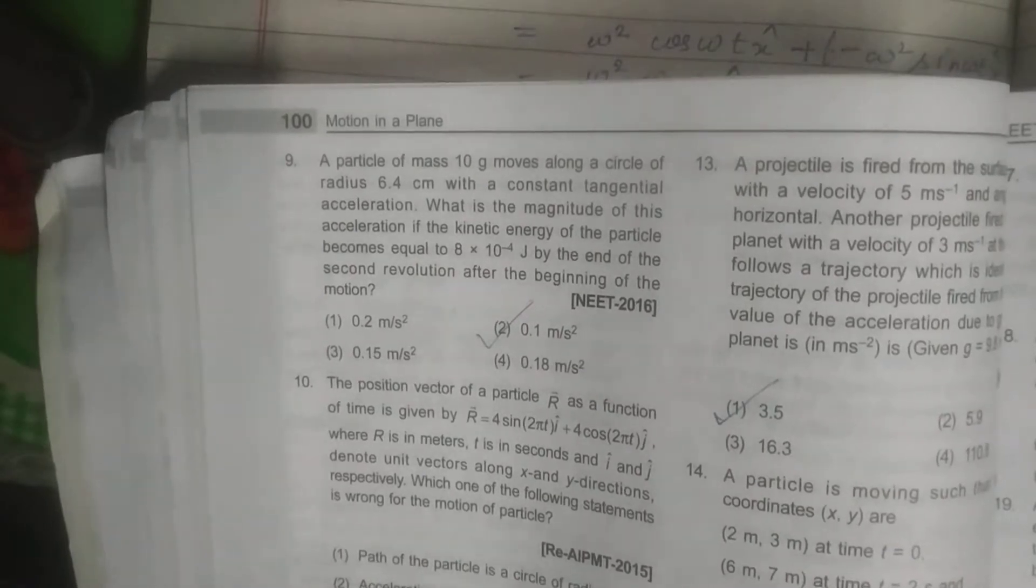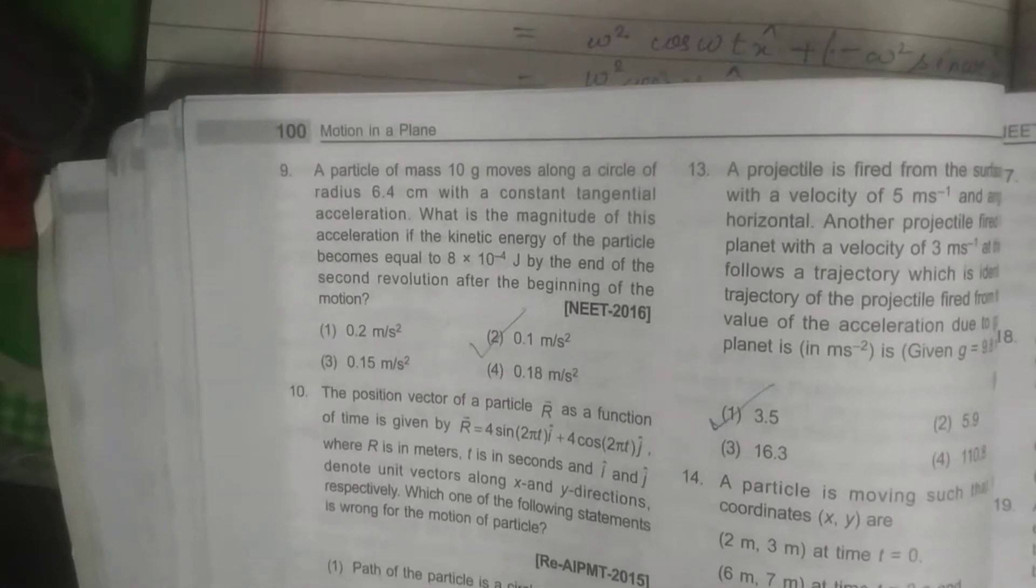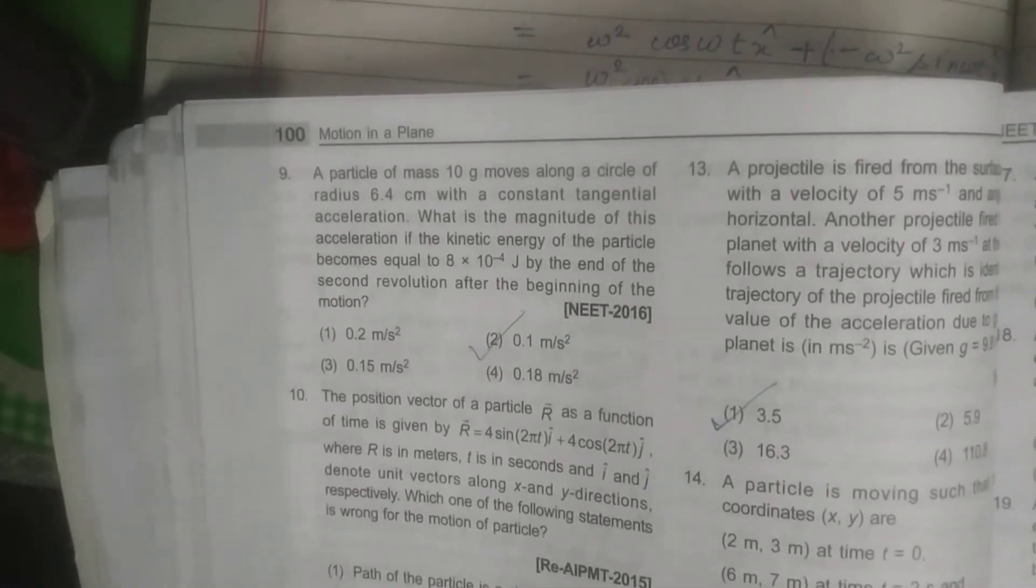So the question says a particle of mass moves along a circle of radius 6.4 cm with a constant tangential acceleration.